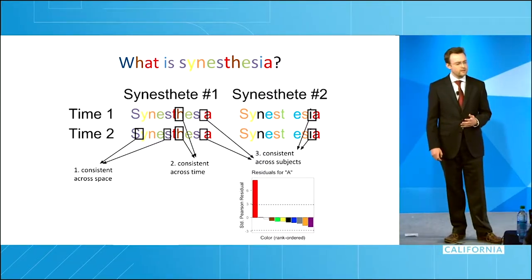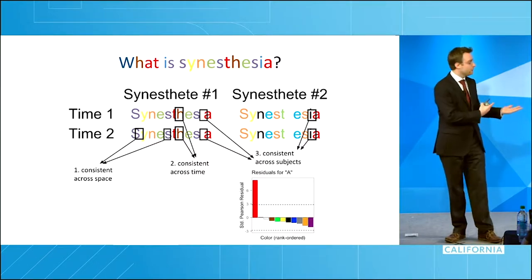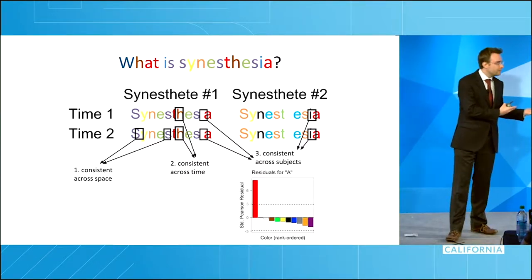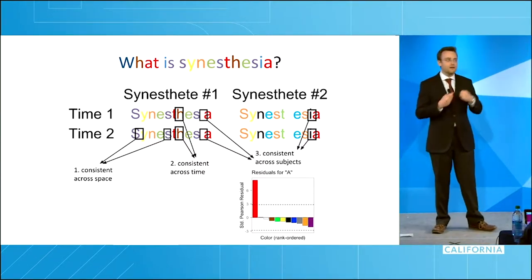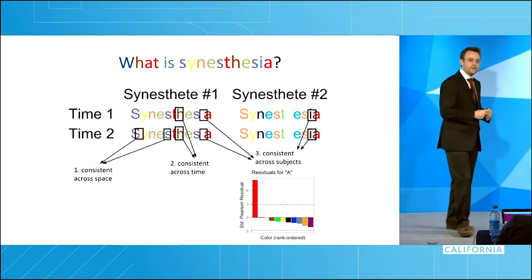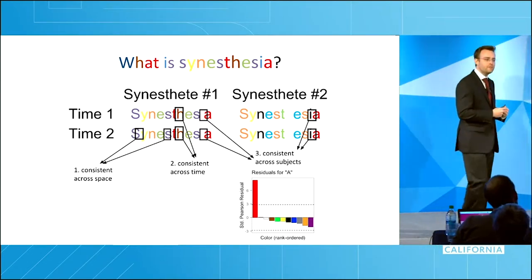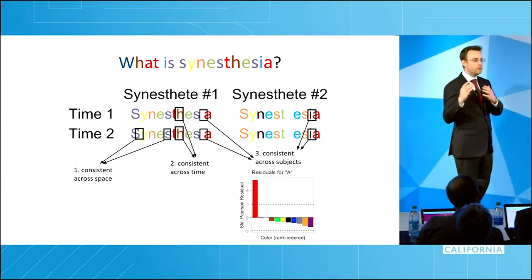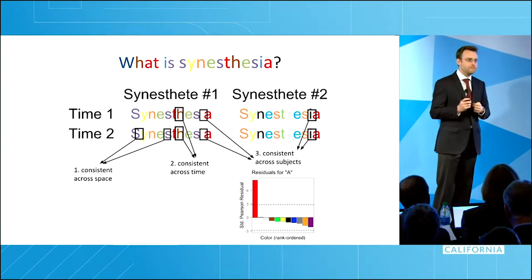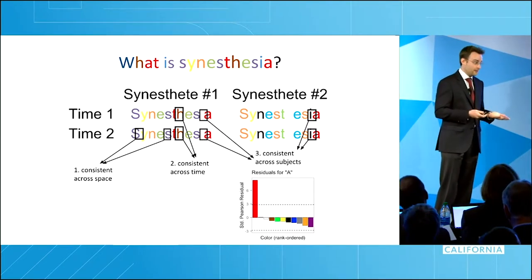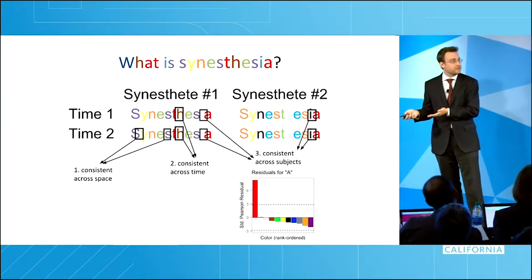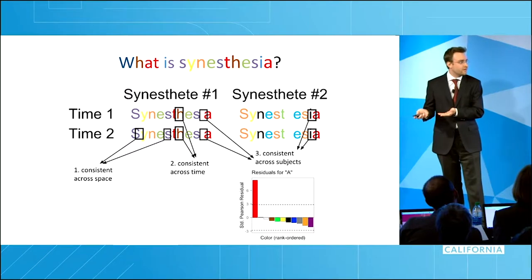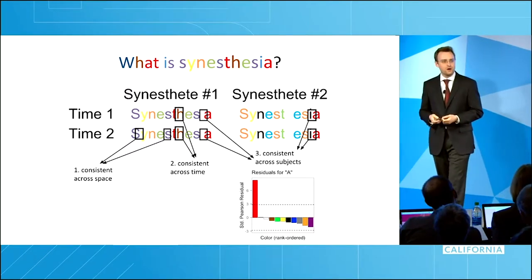Why? A is for apple and apples are red. A is a warm sound, red is a warm color. A is the first letter of the alphabet, red is the first color of the rainbow. You could go on and on. The problem with thinking like this is that each of these theories makes the same prediction — A is red — and so you can't tell them apart.